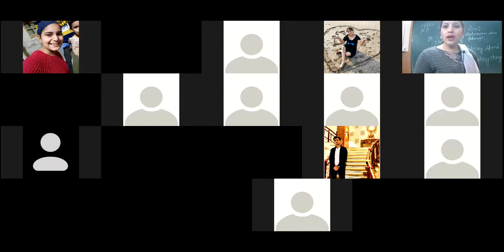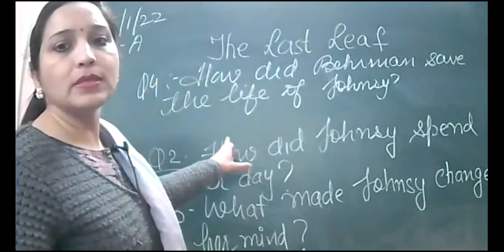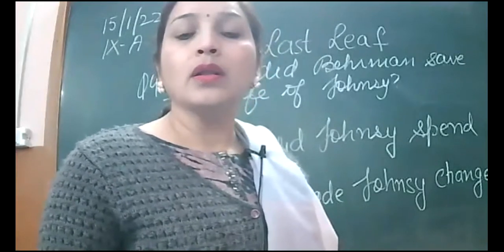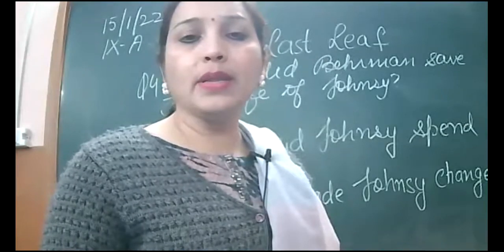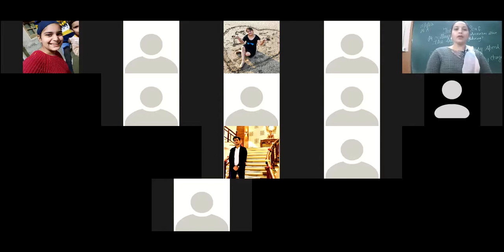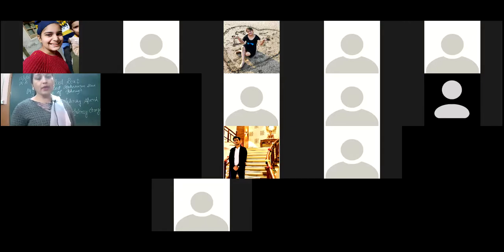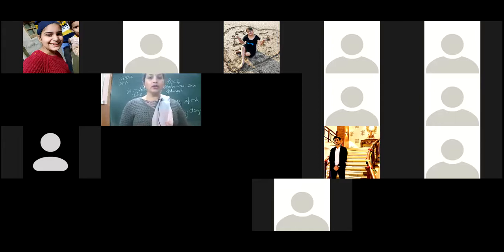Now let's do the question I have written: How did Behrman save the life of Jonesy? When Behrman came to know about the fact that Jonesy was falling ill and had made up this assumption, he thought he should help her. In order to save her life, he started making a painting of the ivy creeper, and this painting was identical to the original one. So when Jonesy looked at this ivy creeper painting, she came out of depression and started a new life.